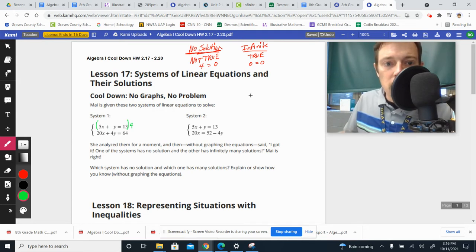So it would give me 20x plus 4y equals 4 times 13, which is 52. And then underneath of it, we would have 20x, we would have 4y, and we would have 64.